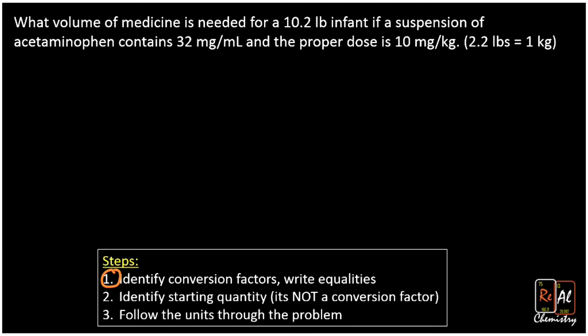Let's identify the conversion factors. Well, 10.2 pounds just has one unit, pound, and that's an infant. So we're dealing here with a young infant who needs some Tylenol, and that infant weighs 10.2 pounds. We see here 32 milligrams per milliliter. Notice that has two units. So that can be used as a conversion factor. Let's add that here. 32 milligrams equals one milliliter.